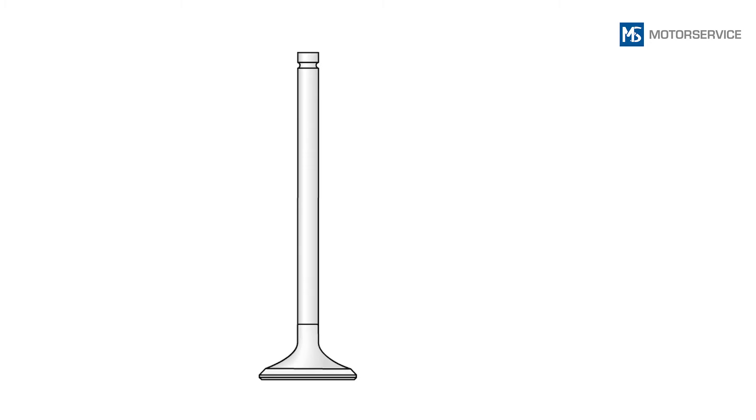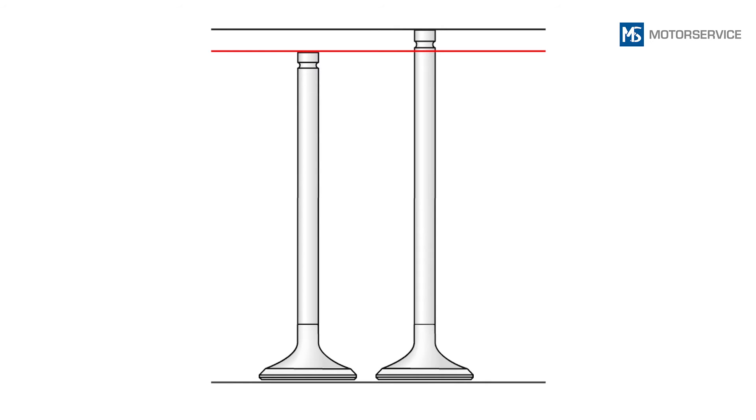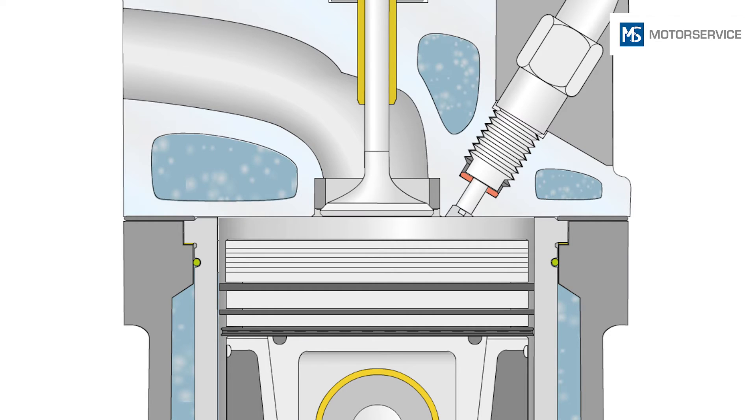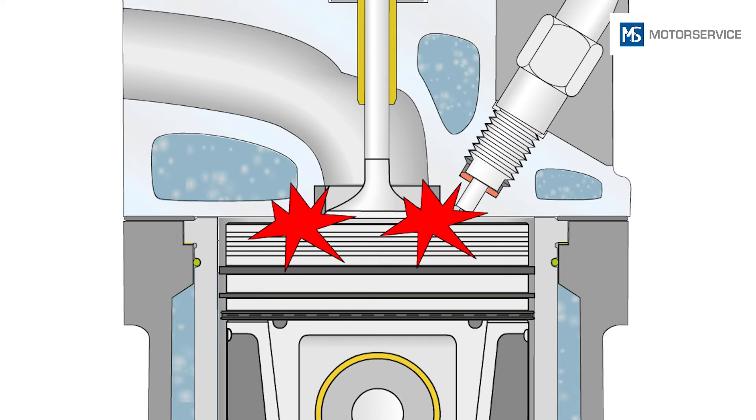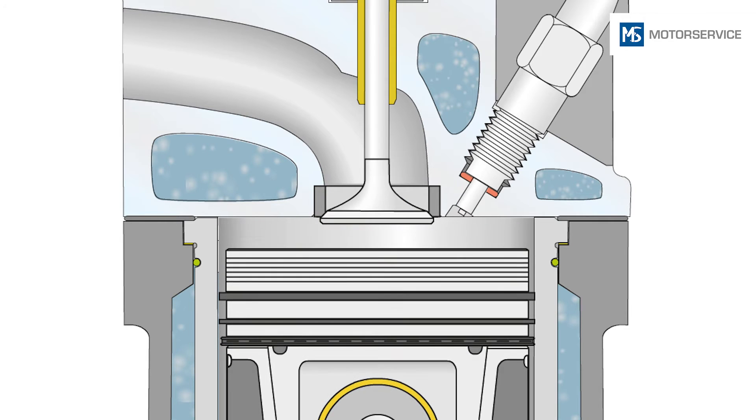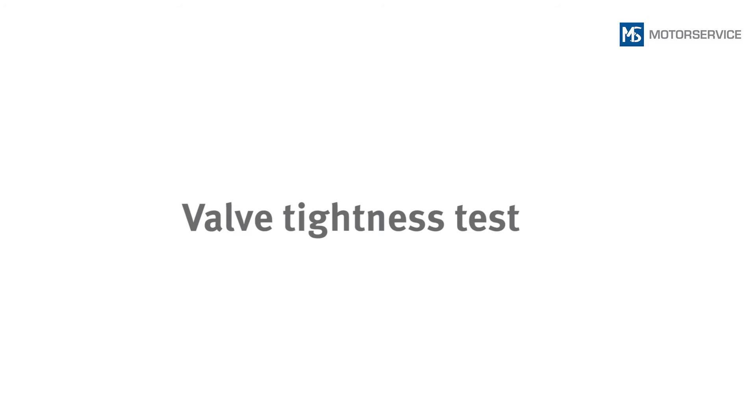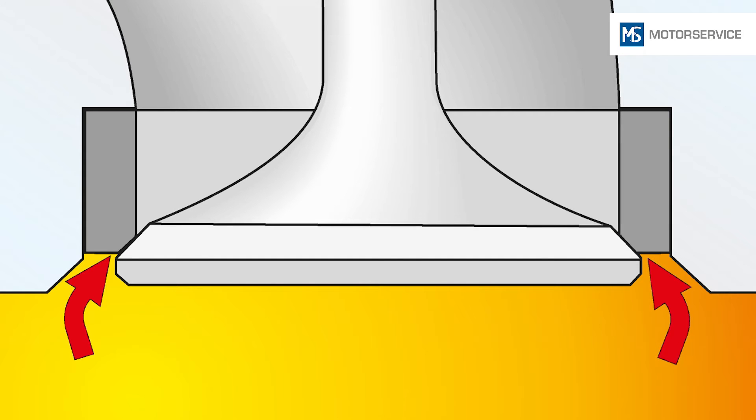If a valve recess that is too big is detected, it is probably the wrong valve or an excessively reworked valve. Such valves must not be used. If valves protrude too far into the combustion chamber, these can collide with the piston during operation. If the valve dimensions are okay, a valve protrusion that is too big can be corrected by reworking the valve seat insert.